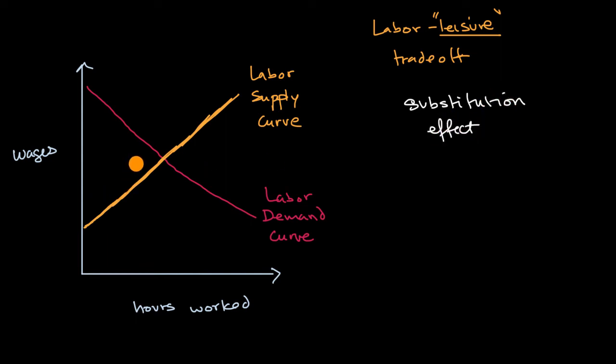As wages go higher, you could view the opportunity cost of leisure gets more and more expensive. And if anything gets more expensive, you try to substitute it with other things. In this case, you could substitute it with more labor by just working more.